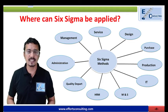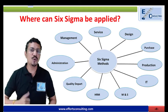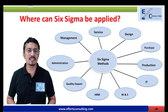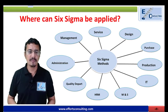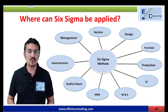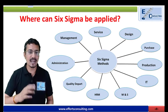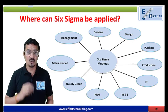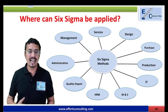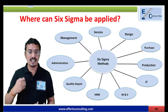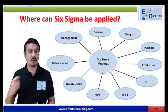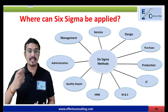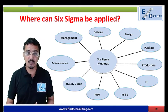Where can we apply Six Sigma? Friends, where you are having processes, where you are having activities, you can apply Six Sigma. As this figure shows, you can apply Six Sigma methods in service, design, purchase, production, IT, amenities, HRM, quality department, administration, and management.